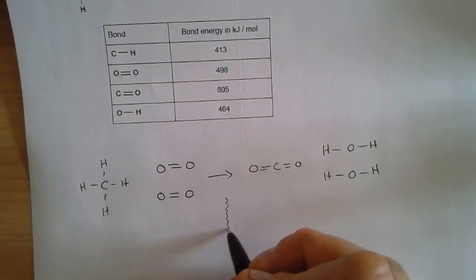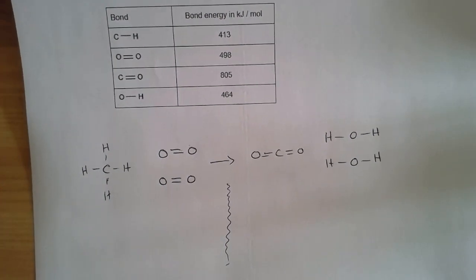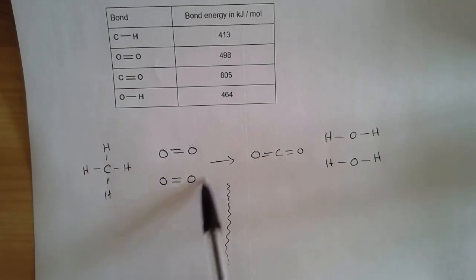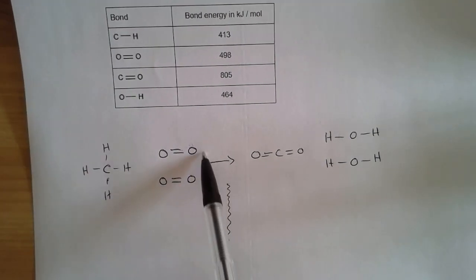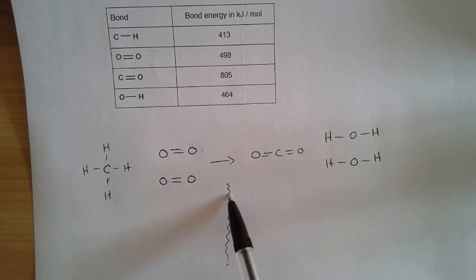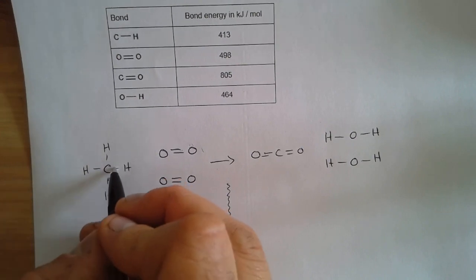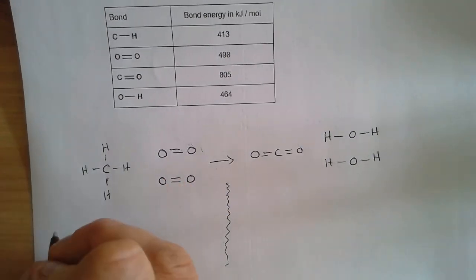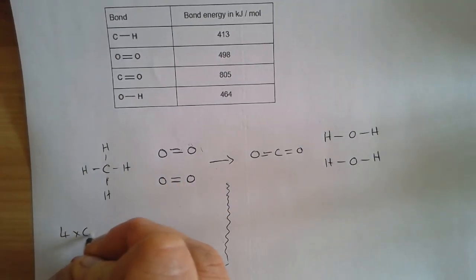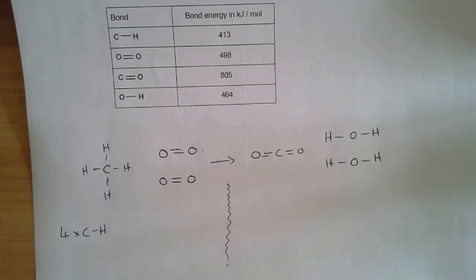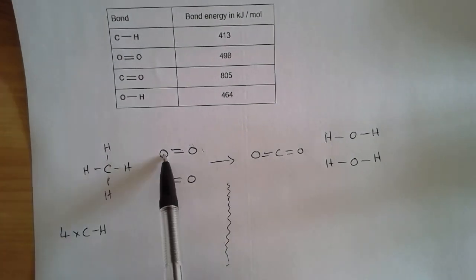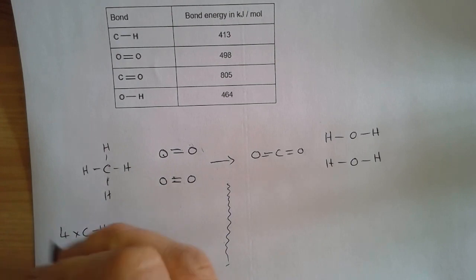So we're going to look at all the bonds that have been broken in the reactant, so everything on the left hand side of the reaction arrow. Notice I've just drawn a little squiggly line here to keep them separate. So what's happened here, we've got one, two, three, four carbon to hydrogen bonds, so four times carbon to hydrogen bonds, and we've got two oxygen to oxygen double bonds like that.